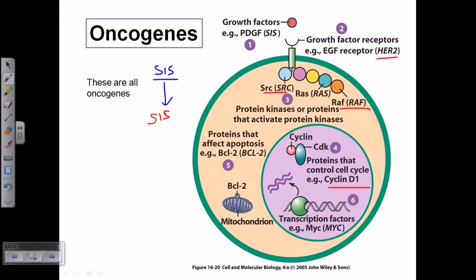The fifth type includes proteins that affect apoptosis — the apoptotic factors. The gene BCL2 produces proteins involved in apoptosis. Malfunctioning of BCL2 can cause a loss of cell death, so the cell will keep living, and the cell becomes immortal.